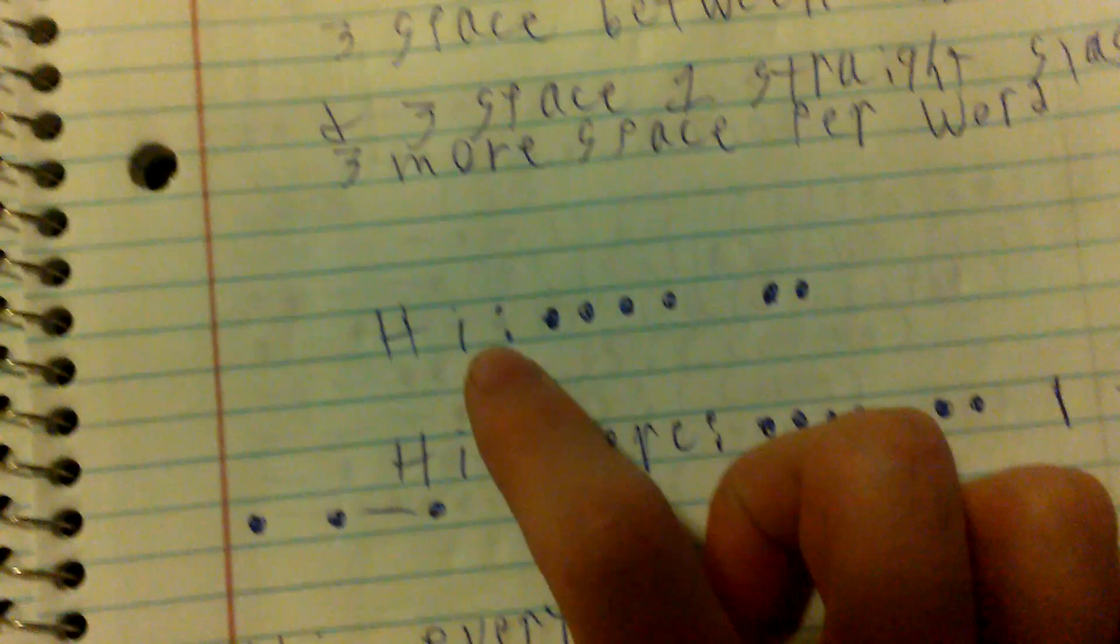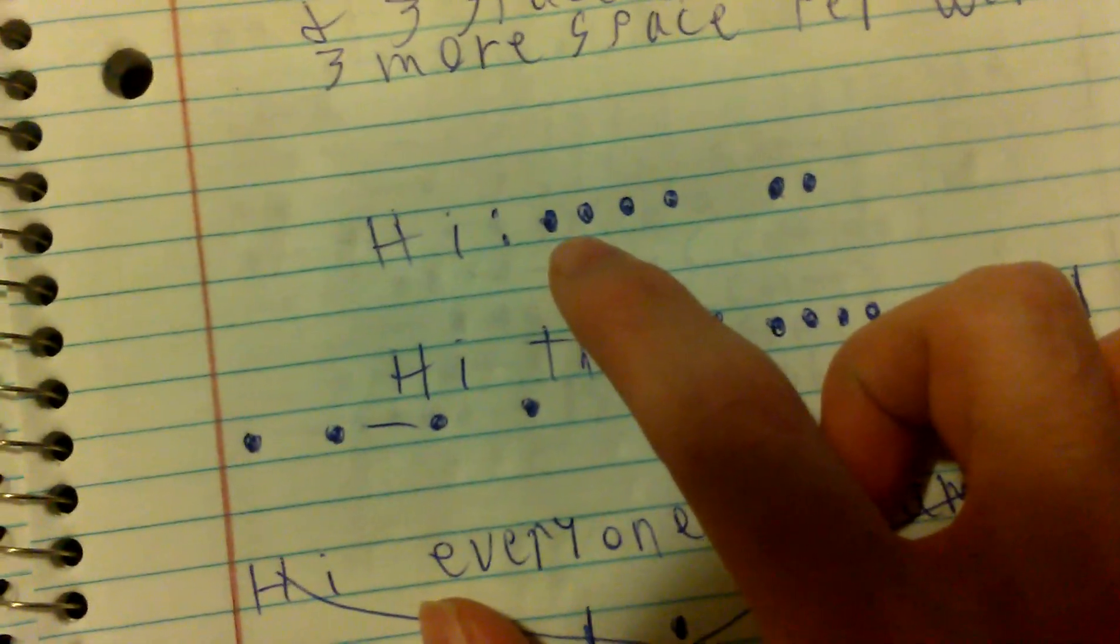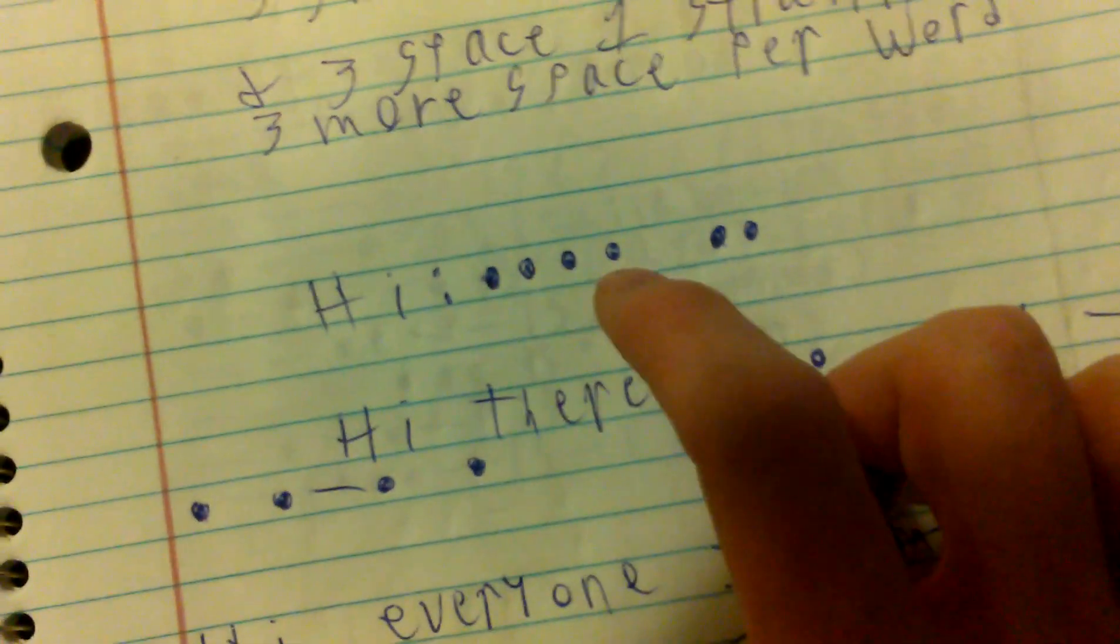For the word 'hi,' it's made up of four dots for the H and two for the I. Then I put 'hi there.'